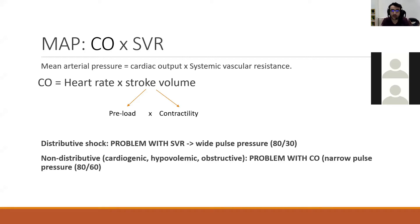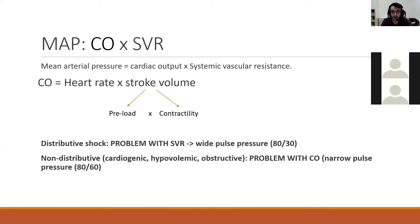Heart rate is the number of beats per minute — around 80 for an average person. Stroke volume is the amount of blood pumped with each beat. Multiply heart rate by stroke volume and you get cardiac output. Within stroke volume, you have preload — how much the heart can relax (diastolic) — and contractility — how much the heart can pump blood (systolic).